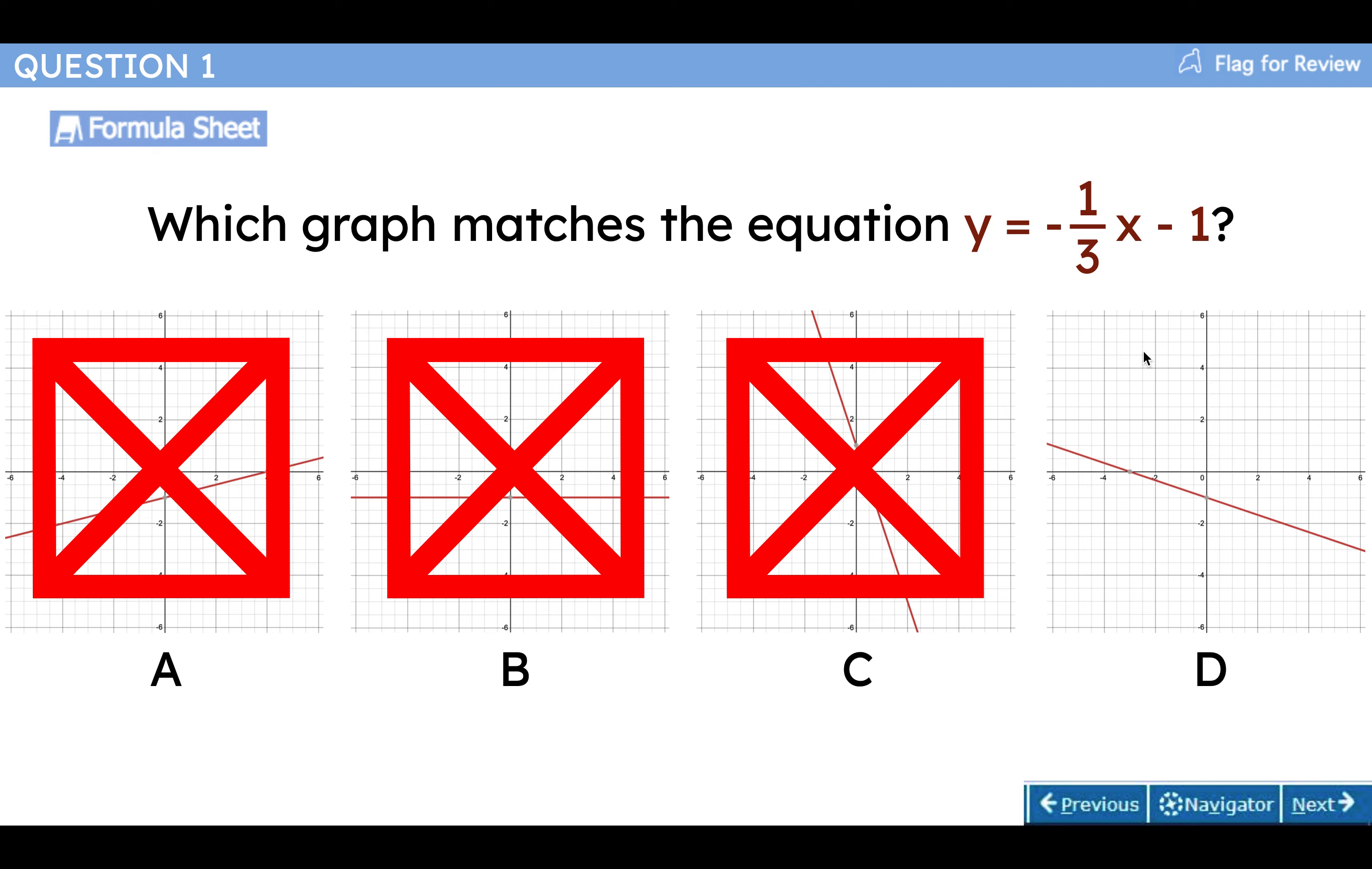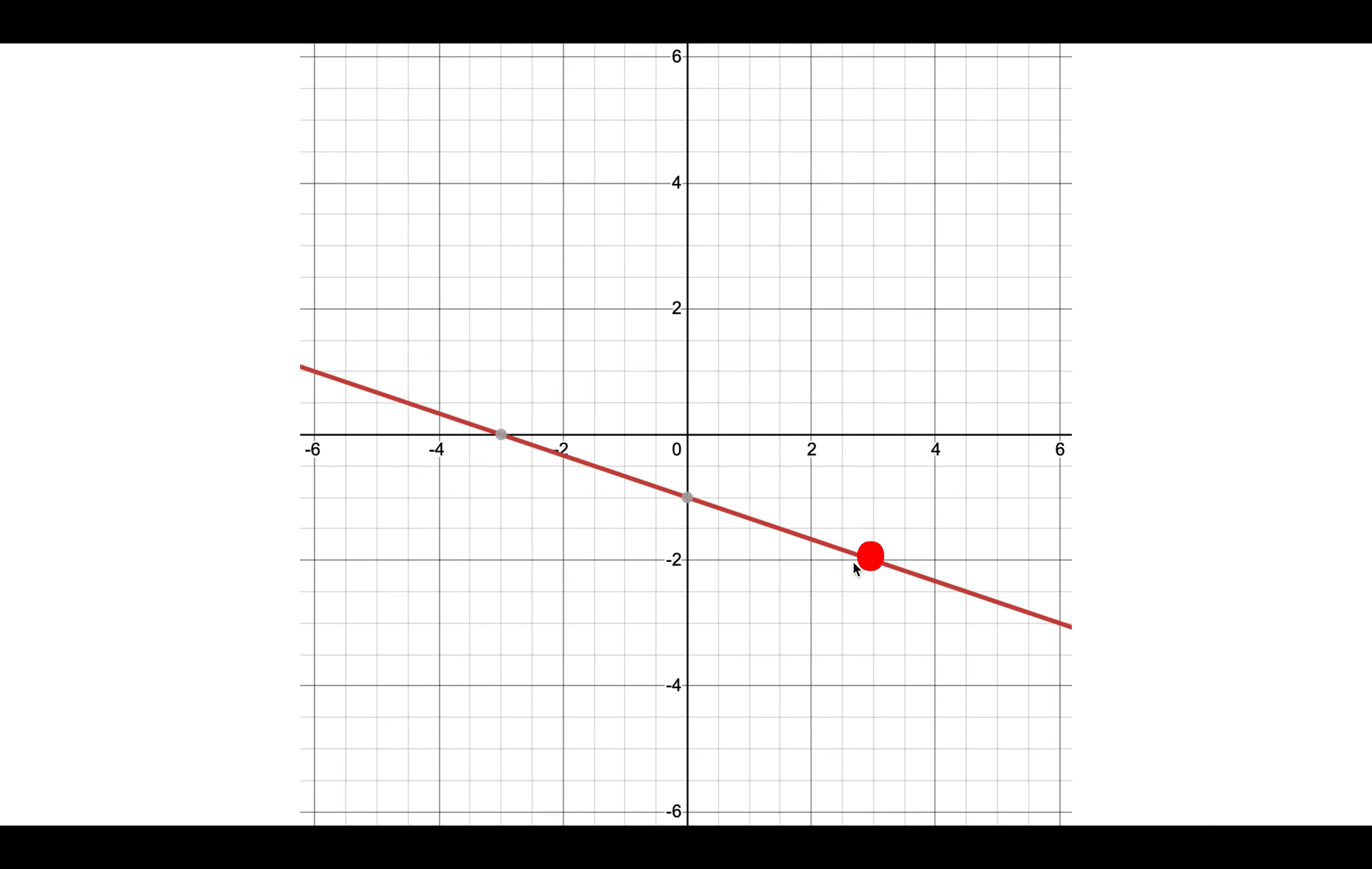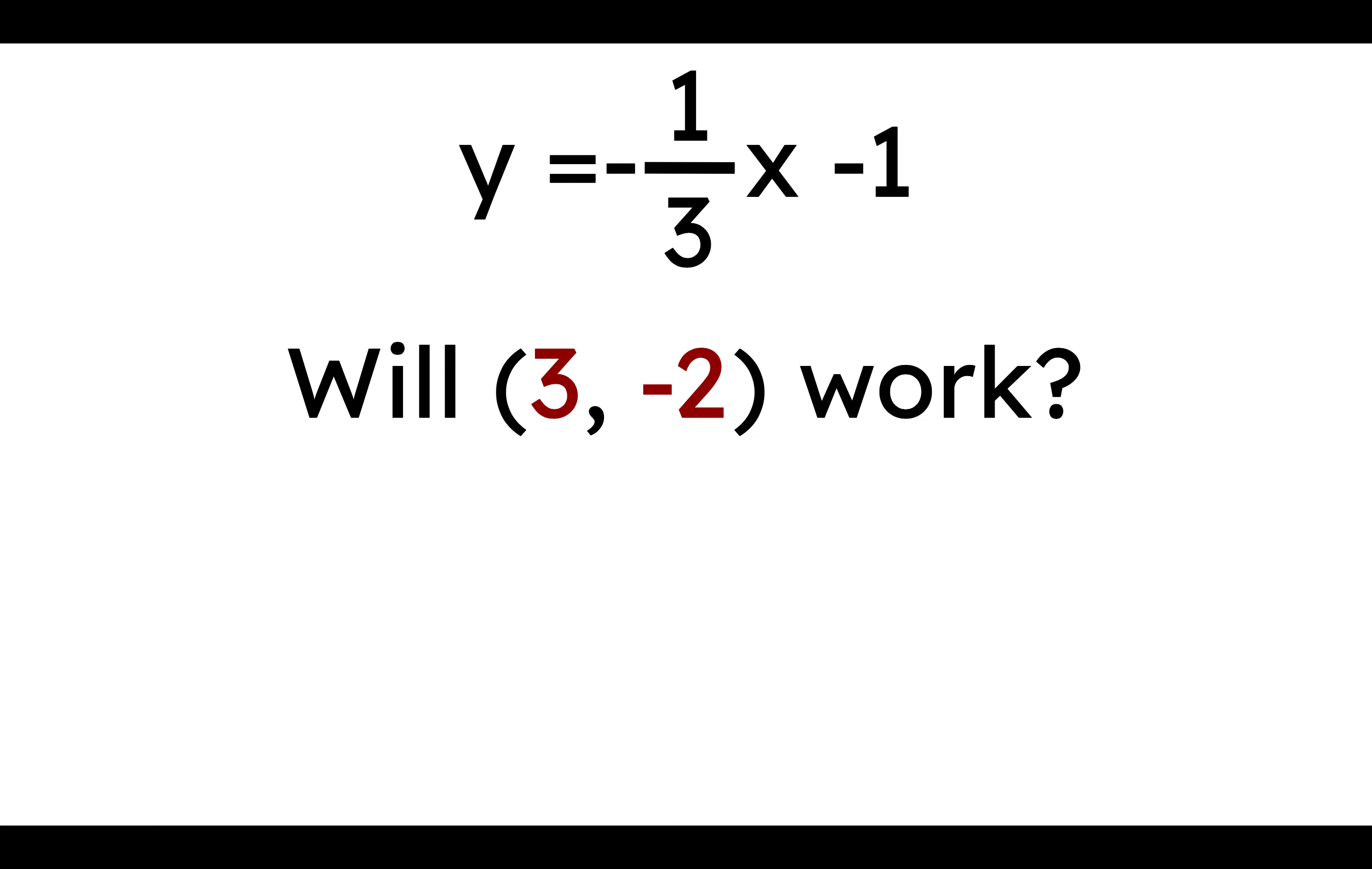But let me show you what it looks like when it works. Because every point on this line should make this equation work. This one looks like negative 3, 0 we could plug in. Or let's pick another one. This one is 3 over and 2 down. So the point is 3, negative 2.